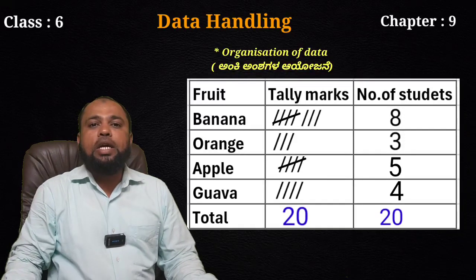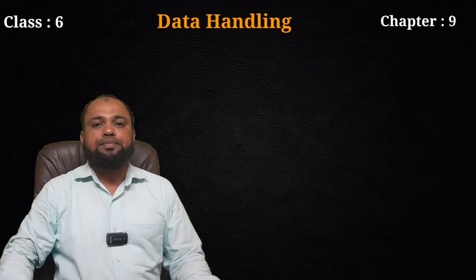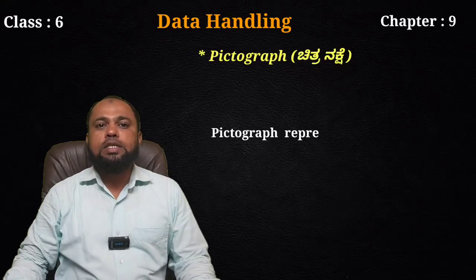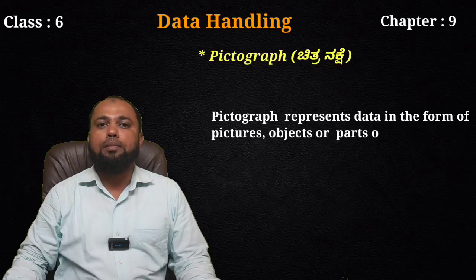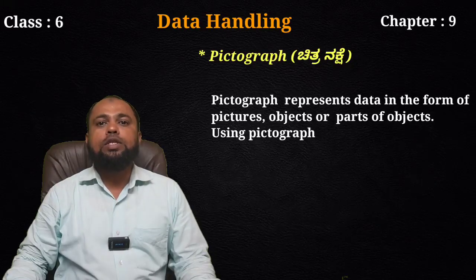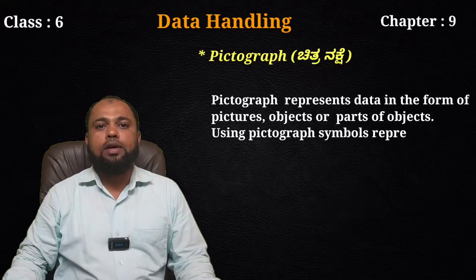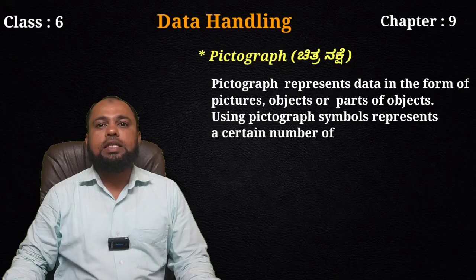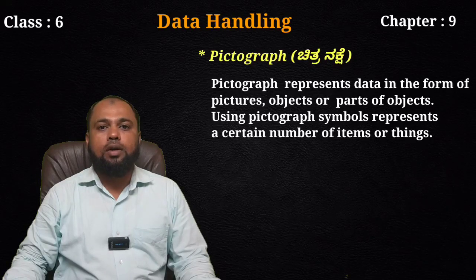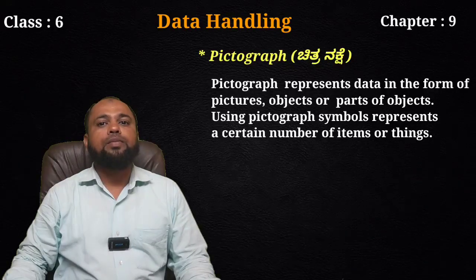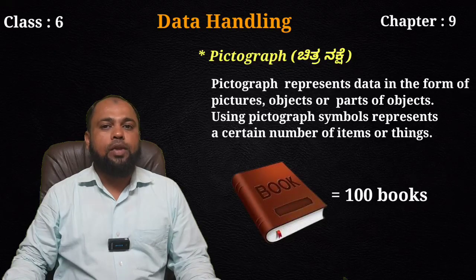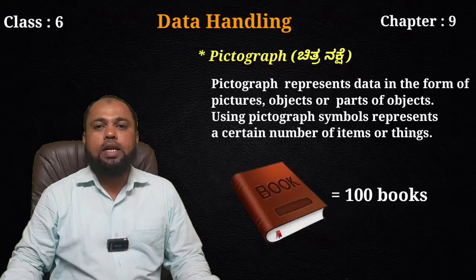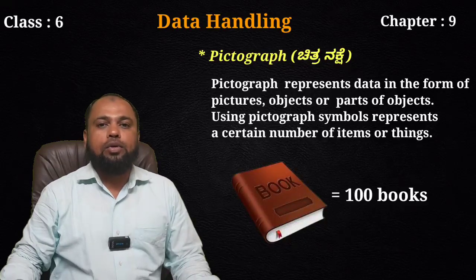The next part is pictograph. A pictograph represents data in the form of pictures, objects, or parts of objects. Using a pictograph, symbols represent a certain number of items or things. For example, a picture of a book can be represented as equal to 100 books.